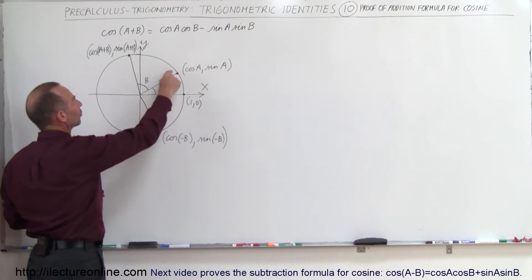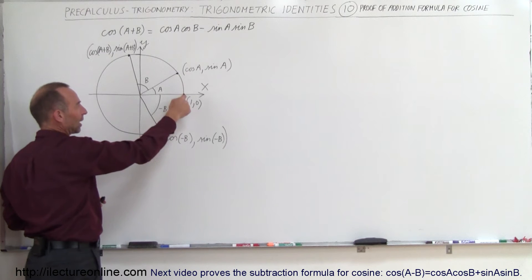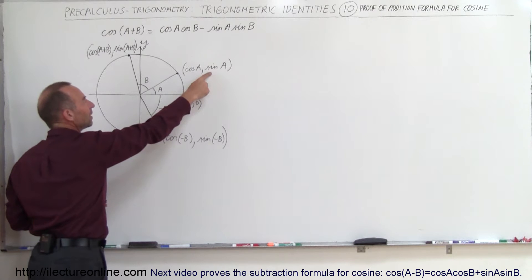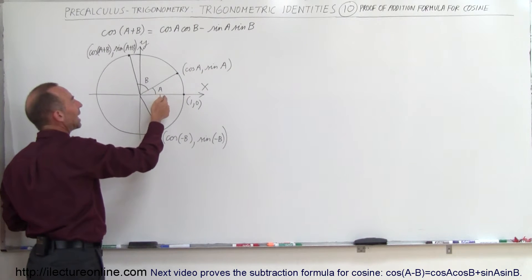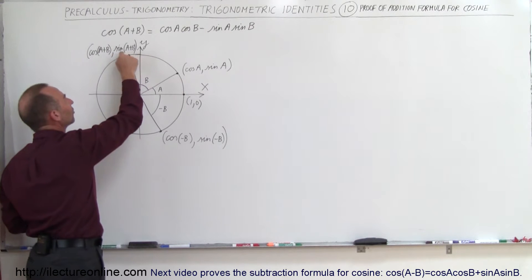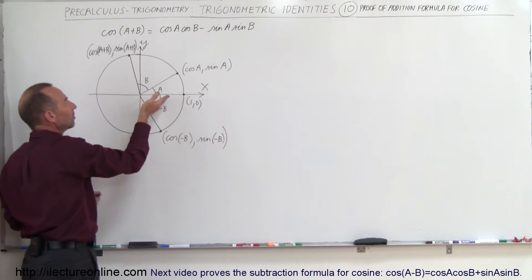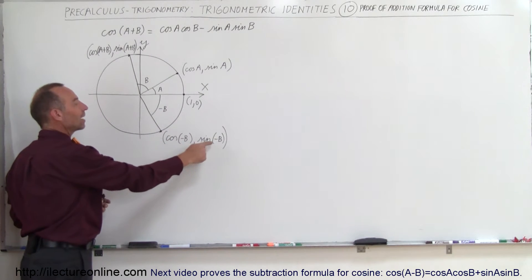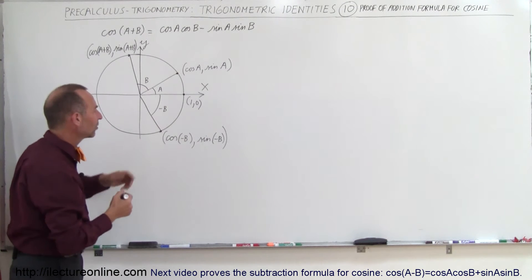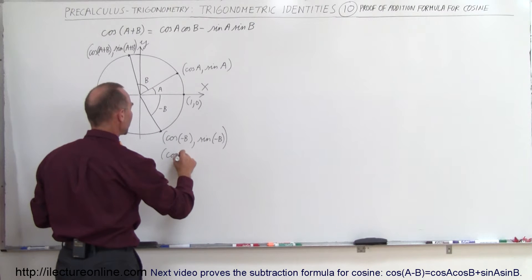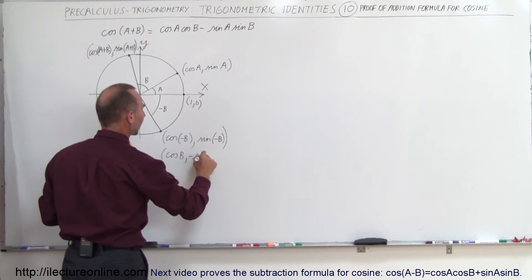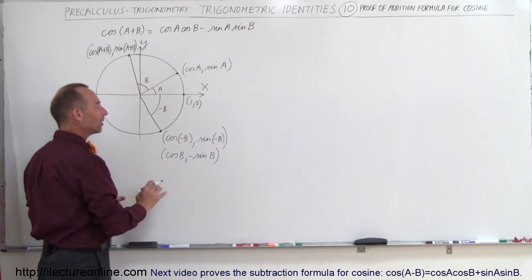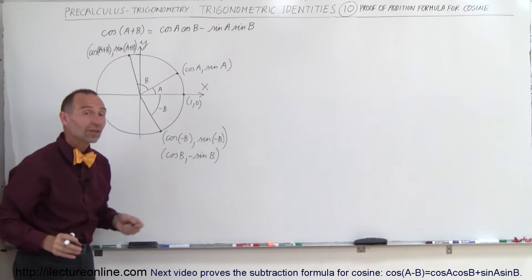We have four points on the unit circle. One point is defined by the cosine of A and the sine of A as its coordinates. Adding A plus B gives us the coordinates cosine of A plus B and sine of A plus B. Since there's a negative angle, another point has coordinates cosine of negative B and sine of negative B, which can also be written as cosine of B and negative sine of B, because cosine of a negative angle equals cosine of the positive angle, while sine changes sign.